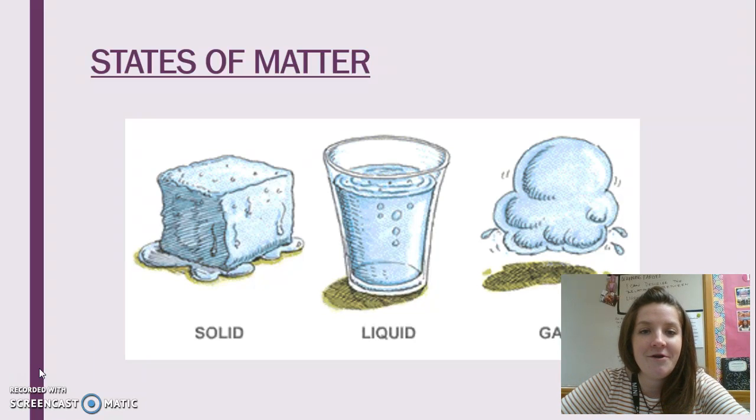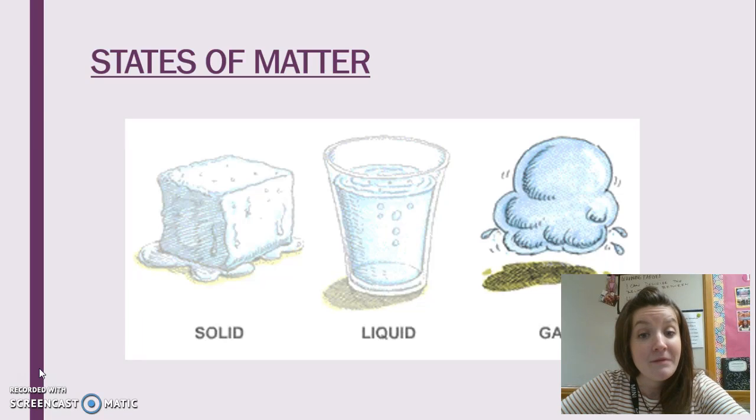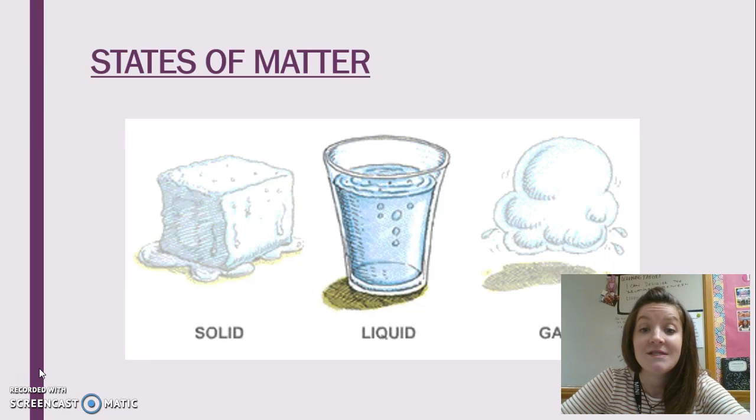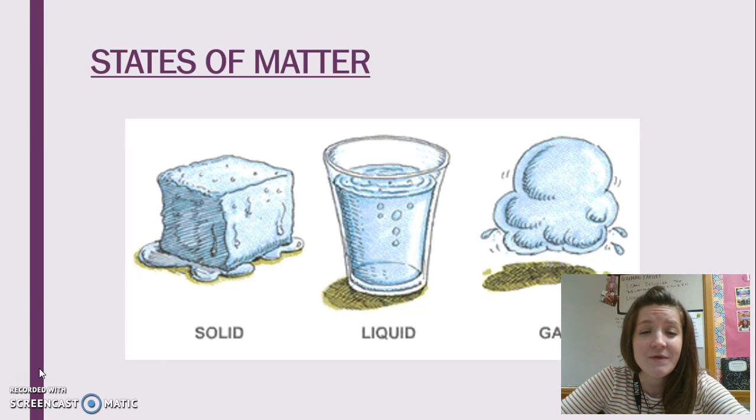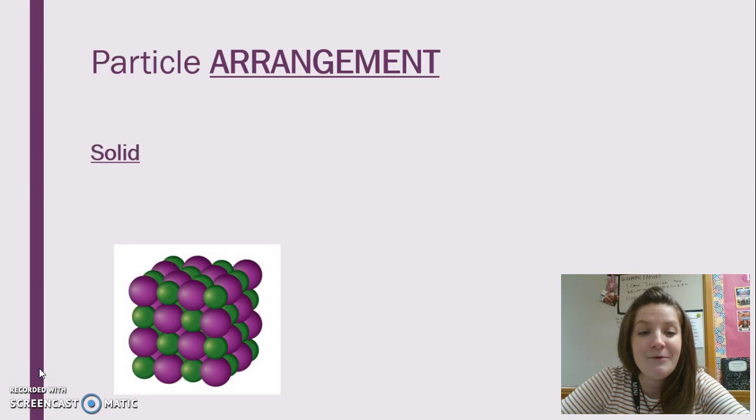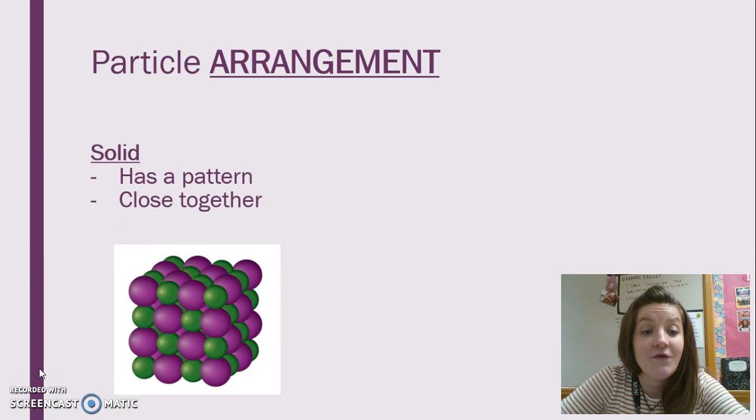To recap some of the learning that you've done so far, there are three states of matter that we have been discussing: solids, liquids, and gases. Yes, there are other states of matter as well, like plasma for example, but in our class in eighth grade, we've been focusing on these three. Solids, liquids, and gases are made of particles, and those particles can be arranged differently based on the state of matter that the particles are in. For example, solids have a very specific arrangement. They have a pattern to them, and the particles are very close together.